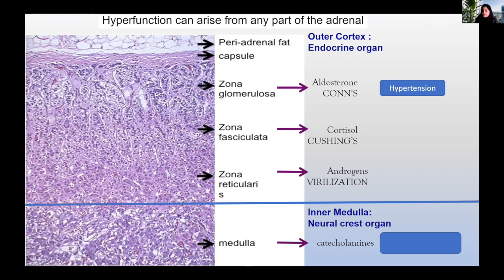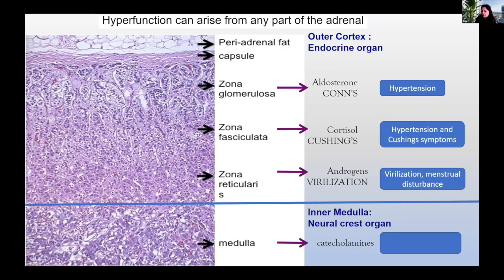The outermost gland produces aldosterone, and you'll get aldosterone disorders. Hypertension is usually the presentation, and it's usually adenomas that cause this disease. The second layer in is a cortisol-producing layer; these patients present with hypertension or adrenal Cushing's. The innermost cortex layer is an androgen-producing layer; these patients present with virilisation and, in women, with menstrual disturbance. The medulla is neuroendocrine and presents with a wide range of symptoms including hypertension, the flight-or-fight response, and palpitations.